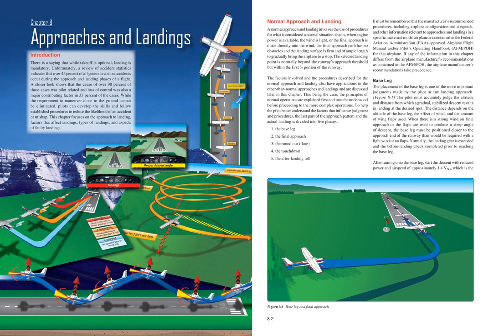A normal approach and landing involves the use of procedures for what is considered a normal situation — when engine power is available, the wind is light, or the final approach is made directly into the wind, the final approach path has no obstacles, and the landing surface is firm and of ample length to gradually bring the airplane to a stop. The selected landing point is normally beyond the runway's approach threshold but within the first one-third portion of the runway.